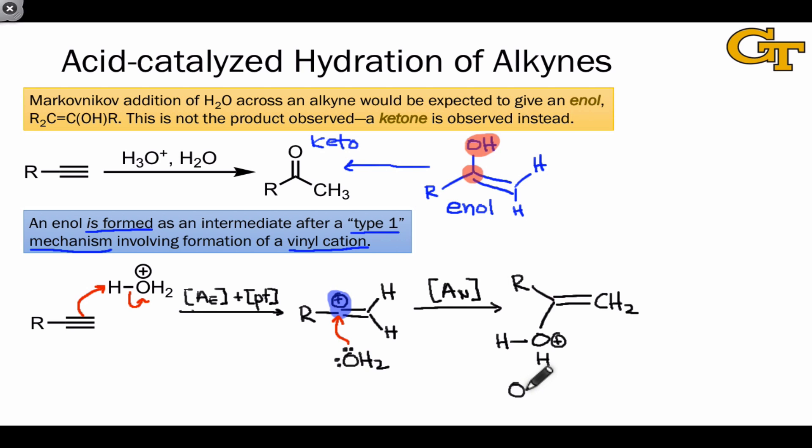To reach the enol intermediate and regenerate the acid catalyst, the final step here is proton transfer from the protonated enol, which is this intermediate we generated via this A sub N step, to water. This gives the enol and H3O+, as it must, since this reaction is acid-catalyzed.